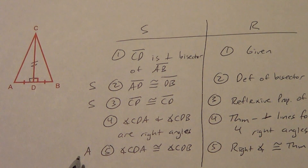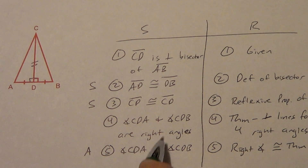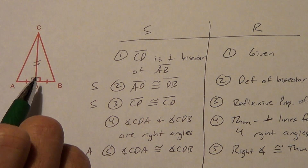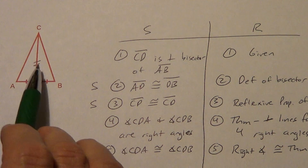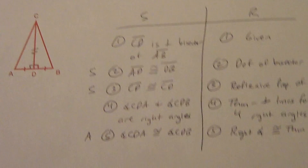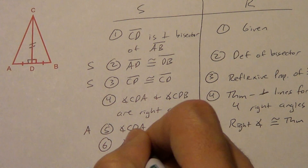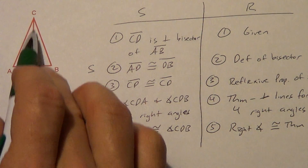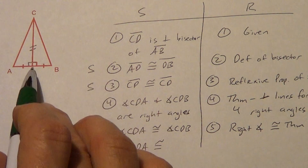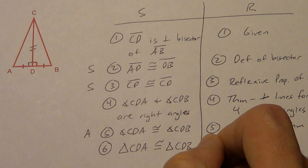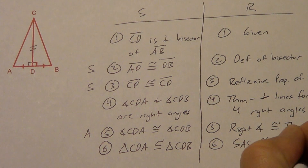Side-side-angle is one we don't like, but it does work if the angle is a right angle — in which case we might call it HL. Do we have HL here? The hypotenuse is over on the other side with no marks. Looking at the order: side, angle, side. So triangle CDA is congruent to triangle CDB by the SAS congruence postulate.